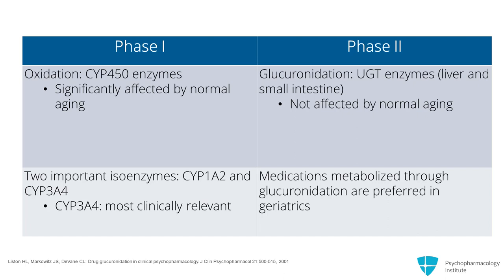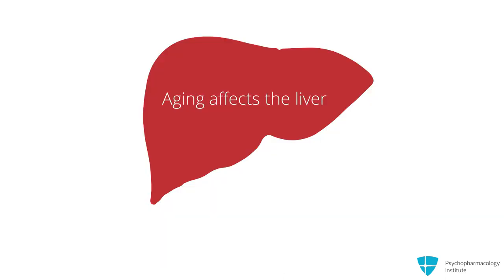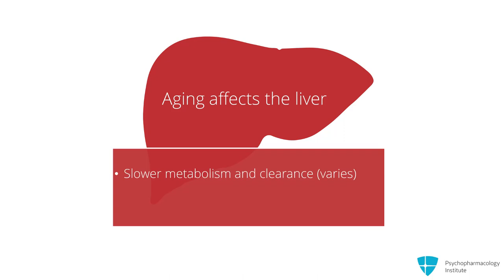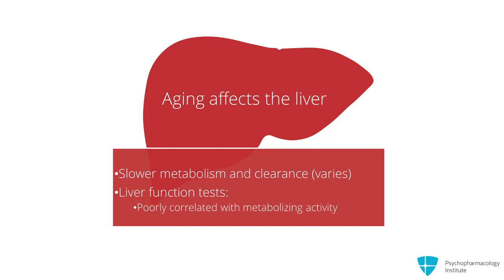In fact, only two of the CYP450 enzymes important to psychotropic metabolism have activities that are meaningfully reduced with aging: CYP1A2 and CYP3A. Of those two, CYP3A is the most clinically relevant because of the large number of psychotropics that are substrates and non-psychotropics that are inhibitors of 3A. As an aside, aging does affect the liver — it generally slows the metabolism and clearance of drugs, although to varying degrees among elderly individuals. There is no good way to test for this clinically, as the so-called liver function tests are poorly correlated with drug metabolizing ability.